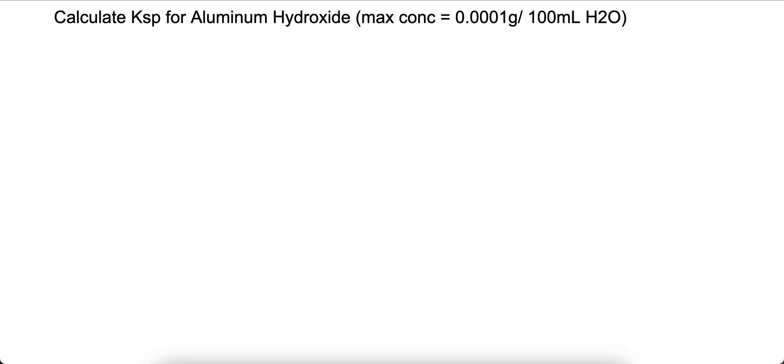Calculate the Ksp for aluminum hydroxide, or Al(OH)3, considering the max concentration is 0.0001 grams per 100 milliliters of H2O.